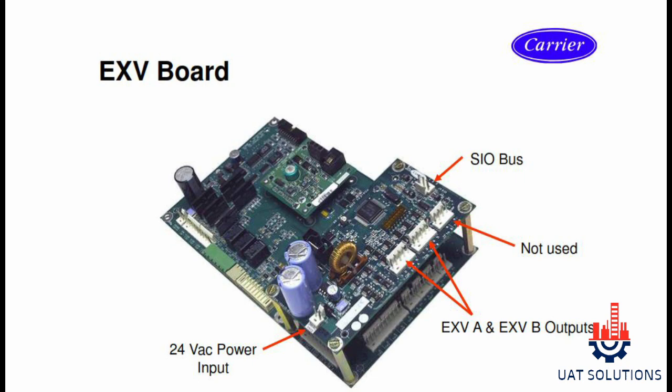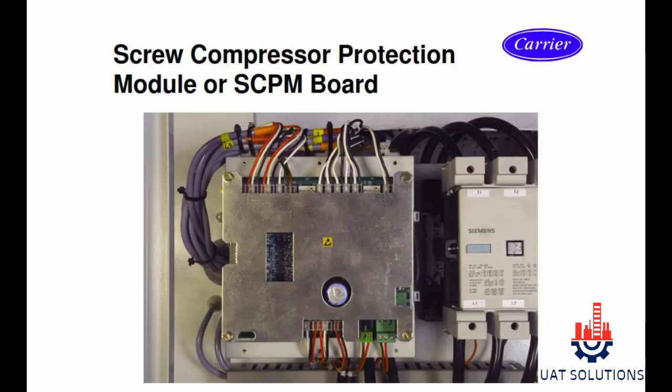All the connections on the board are marked with arrows and show the positions on the EXV board. The SIO bus is used for communication with other boards in the chiller. EXV A and B outputs are used to connect the expansion valves for circuit A and B, and 24 volt AC to power up the board.